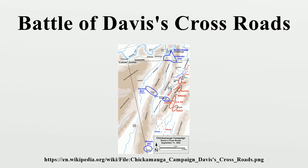Thomas's corps raced forward, seized the important gaps in Missionary Ridge and the Pigeon Mountains, and moved out into McLemore's Cove. Maj. Gen. James S. Negley's Division, supported by Brig. Gen. Absalom Baird's Division, was moving across the mouth of the Cove on the Dug Gap Road when Negley learned that Confederate units were concentrating around Dug Gap. Moving through determined resistance, he closed on the gap, withdrawing to Davis's Crossroads in the evening of September 10 to await the supporting division. Bragg had ordered Maj. Gen. Thomas C. Hindman with his division to assault Negley in the flank at Davis's Crossroads, while Maj. Gen. Patrick Cleburne's Division forced its way through Dug Gap to strike Negley in front. Hindman was to receive reinforcements for this movement, but most of them did not arrive. The Confederate officers, therefore, met and decided that they could not attack in their present condition.